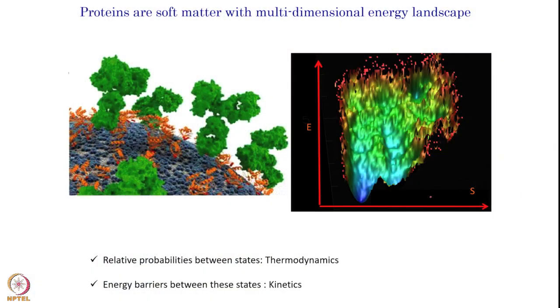You can consider proteins as a soft matter with a multi-dimensional energy landscape. Here one axis is entropy and the other is energy. This is typically called the folding funnel or energy landscape. At the top of the funnel, energy is high and entropy is high — meaning the protein is quite dynamic and sampling various states. As we come down, it gets constricted, dynamics reduces, and energy also reduces. The protein gets stabilized, and this is typically called the native structure — the structure we can solve using NMR. But we can also sample other states populated at different locations in the energy landscape, which are higher energy states with more entropy.